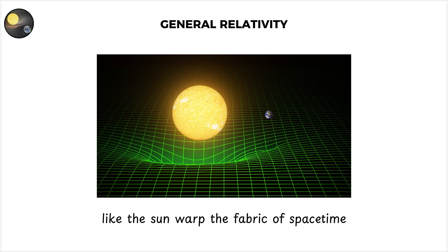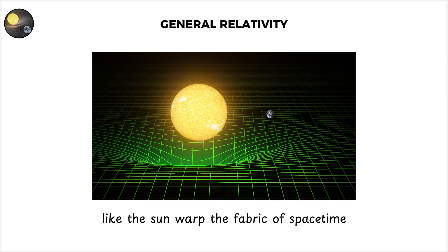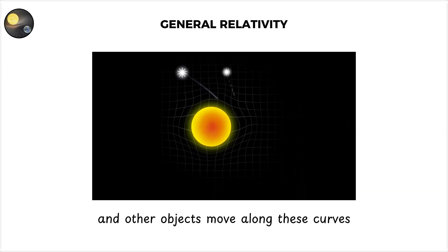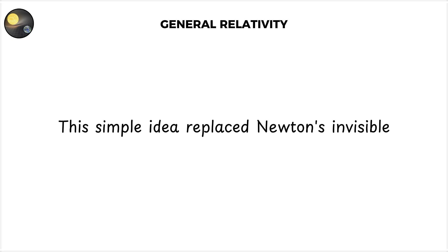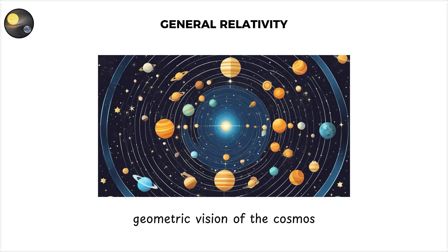Massive objects like the sun warp the fabric of space-time, and other objects move along these curves. This simple idea replaced Newton's invisible gravitational pull with a beautiful geometric vision of the cosmos.